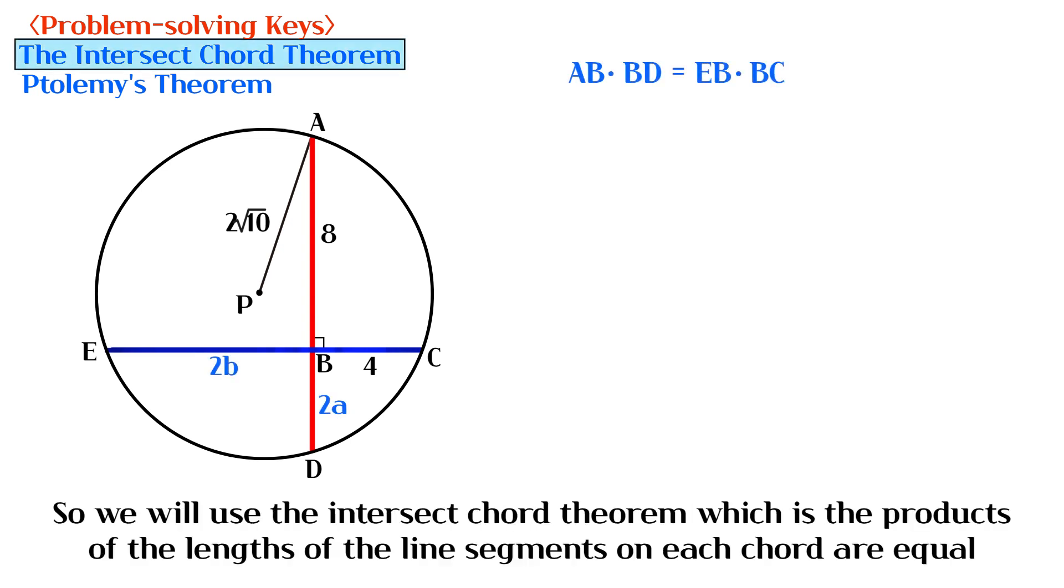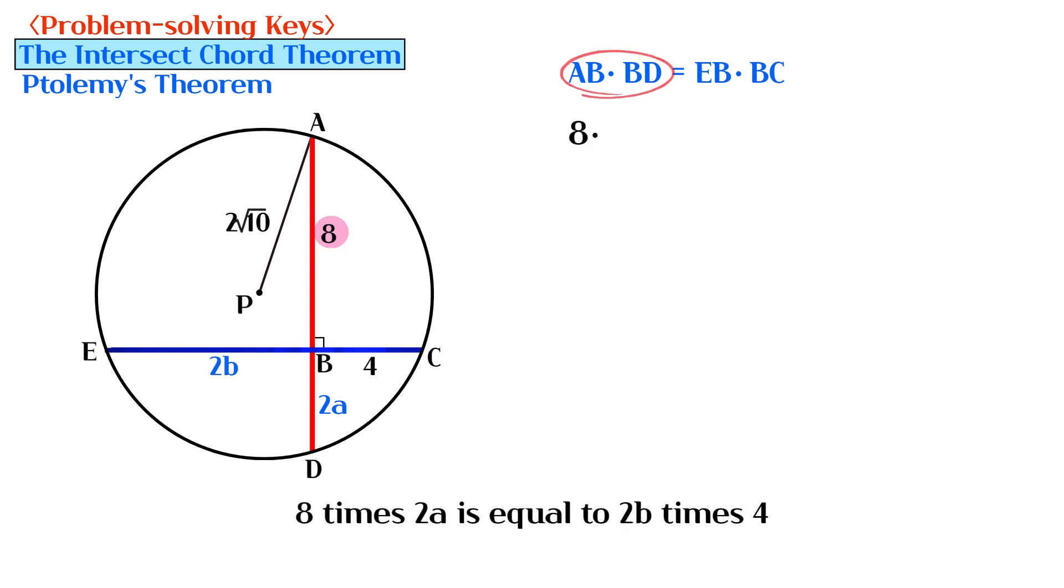So we will use the intersect chord theorem, which is the products of the lengths of the line segments on each chord are equal. A times 2A is equal to 2B times 4.